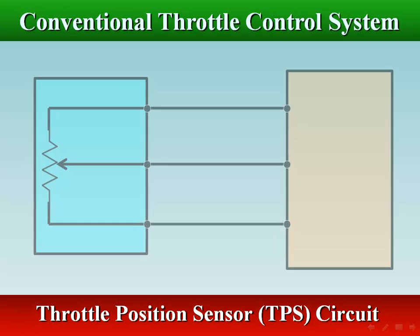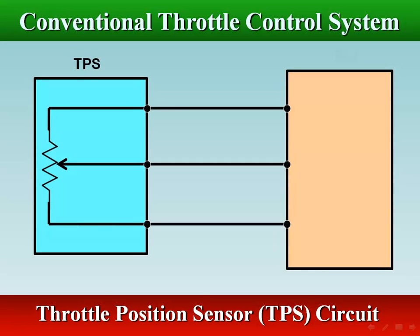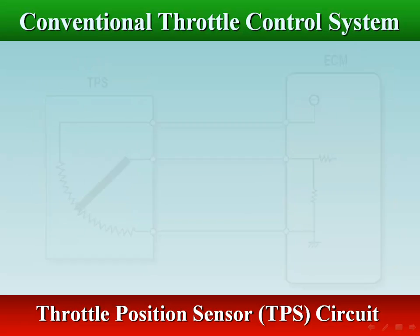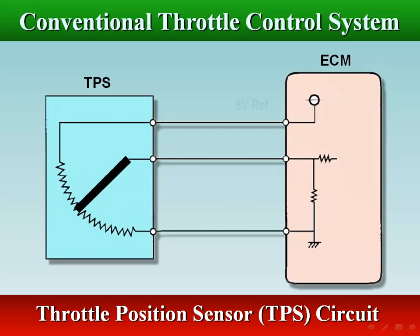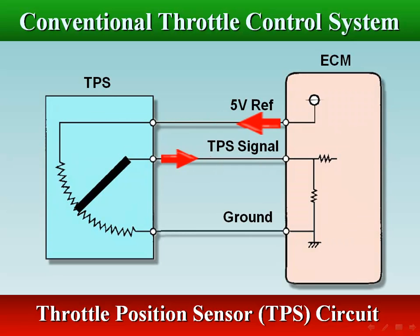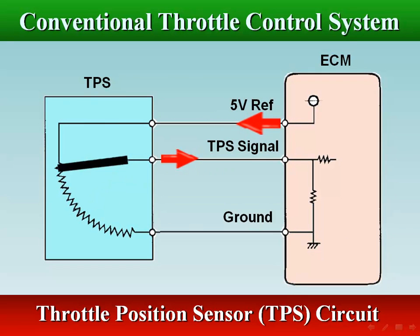The basic TPS requires three wires. The ECM reference voltage of 5 volts is supplied to the TPS, the TPS voltage signal is supplied to the ECM, and a ground wire completes the circuit.